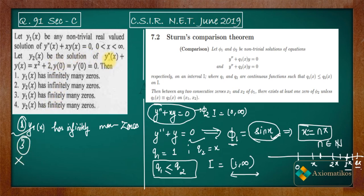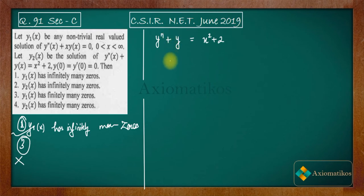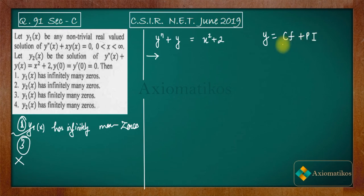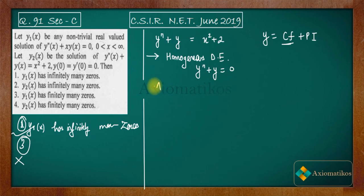Now let us move to y2. For the non-homogeneous equation y'' + y = x² + 2, we solve it in two parts: first find the complementary function (CF) by solving the homogeneous part, then find the particular integral (PI). The complete solution is y = CF + PI.